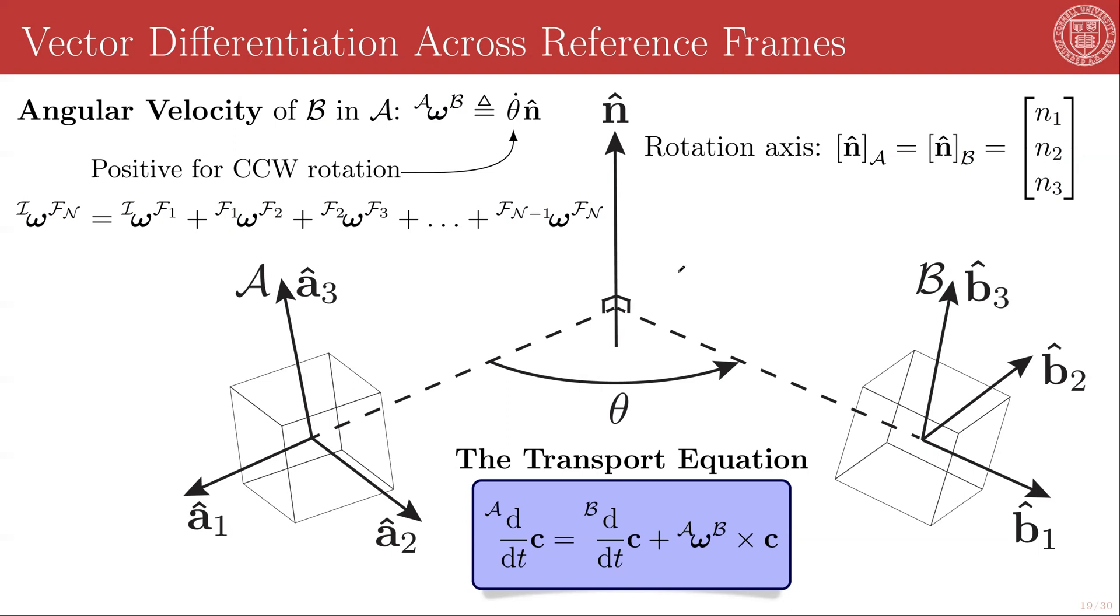Given the axis angle encoding of simple rotations, we can define the angular velocity of frame B in frame A as the rate of change of this angle, which is just theta dot in the n hat direction. And again, our convention is that these rotations are positive and the angular velocity is positive for counterclockwise rotations, counterclockwise being defined as looking down on the n hat axis as before.